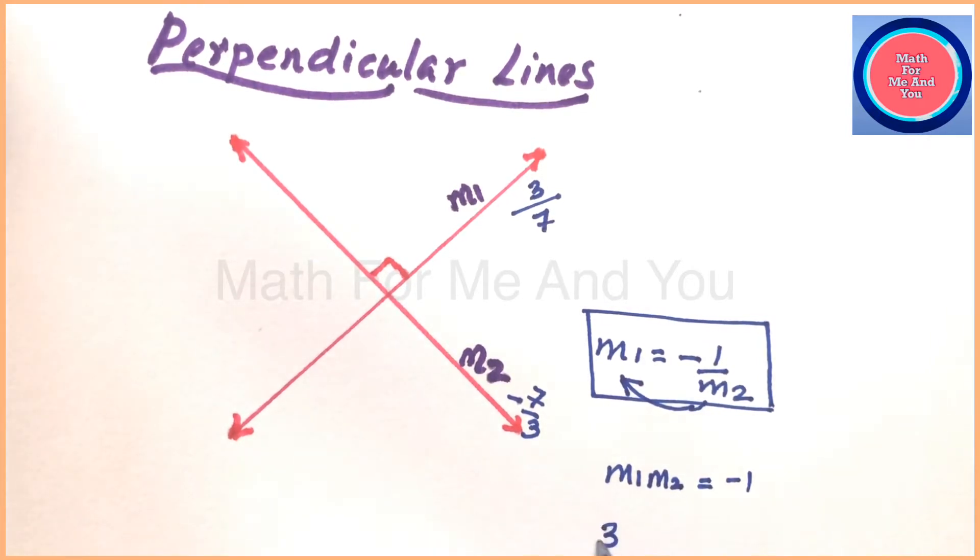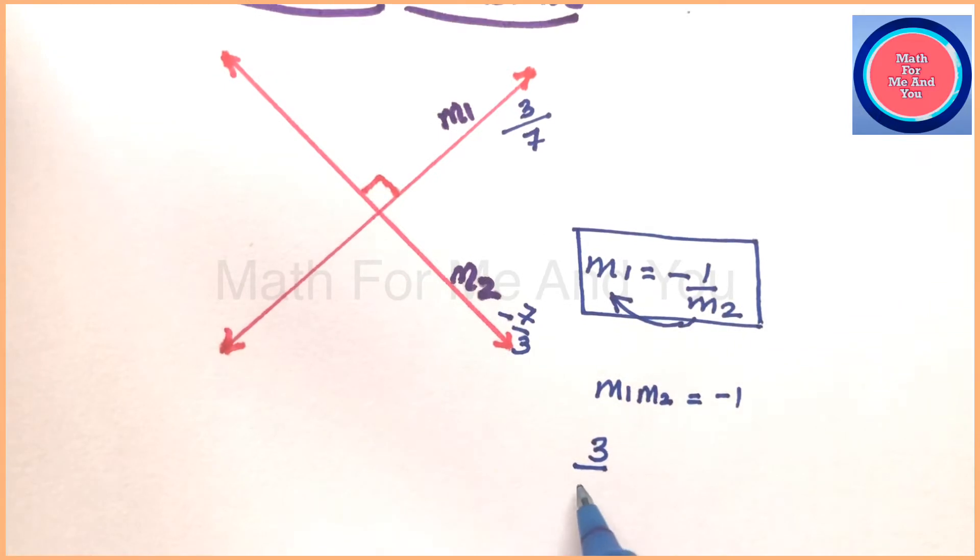Is it correct in this example case? Let's check. The first slope 3 by 7 multiply with the second slope minus 7 by 3. 3 and 3 cancel, 7 and minus 7 cancel, we get negative 1. So we get m1 m2 equals minus 1.